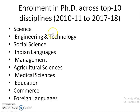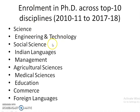So these are the disciplines we are going to see. From this academic year to this academic year, how much percentage of candidates are registered or enrolled for the PhD in the science discipline, in the engineering and technology discipline, social science, and all these disciplines.